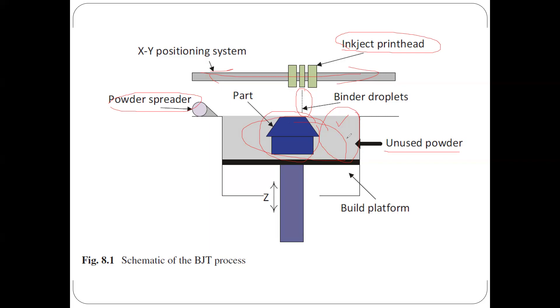This is also attributed as one of the advantages for the binder jet process. The build platform is again the print bed, and it's associated with height-wise movement. As the part is moved, for the next layer the powder spreader will spread another layer.